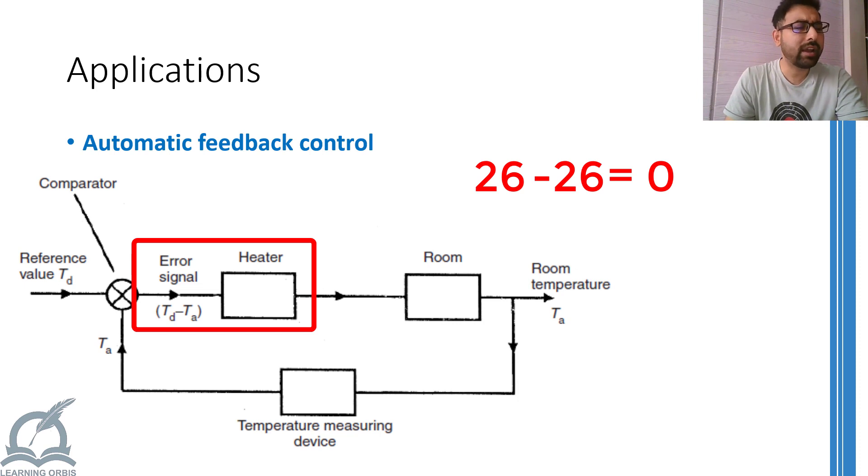Now, as the heater has turned off, the room temperature may start to drop once again. The temperature sensor will still be working and monitoring the room temperature. Now, let's suppose the temperature once again falls to 25 degrees Celsius and hence the error between your selected temperature and the current temperature would be 1 degree Celsius.